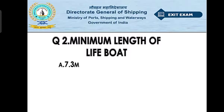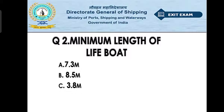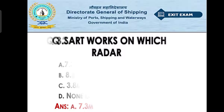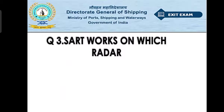Question number two: what is the minimum length of the lifeboat? Option A: 7.3 meters. Option B: 8.5 meters. Option C: 3.8 meters. Option D: none of the above. The right answer is option A — 7.3 meters. The minimum length of the lifeboat should be 7.3 meters. Keep this in mind.